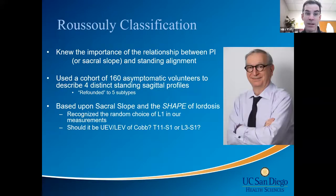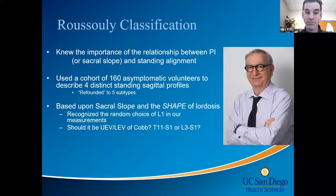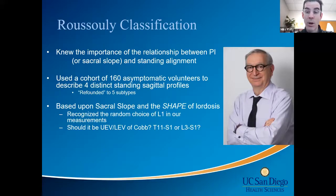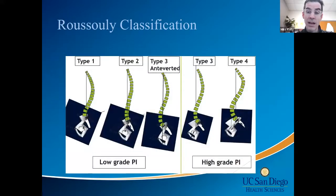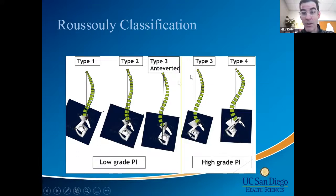Pierre Rousseli from Lyon understood the relationship between pelvic incidence — he goes off sacral slope. The problem is you can only classify someone according to sacral slope before they've degenerated. For me it's not that useful once they're fused and degenerated. He used a cohort of 160 asymptomatic volunteers to originally describe four distinct standing sagittal profiles, now developed into five profiles, based upon the shape and distribution of lordosis relative to their pelvic incidence.